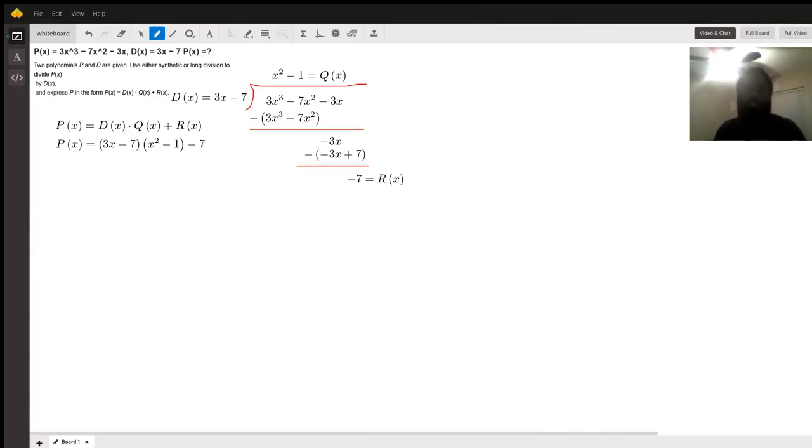This lesson consists of dividing a polynomial p by divisor d which is 3x minus 7.